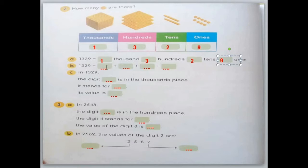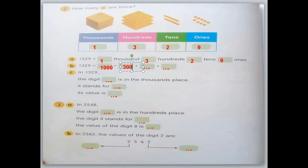Now let's change them to values. One thousand, so the value is 1,000. Three hundreds, so the value is 300. Two tens means the value is 20. And then the 9 ones is just 9.